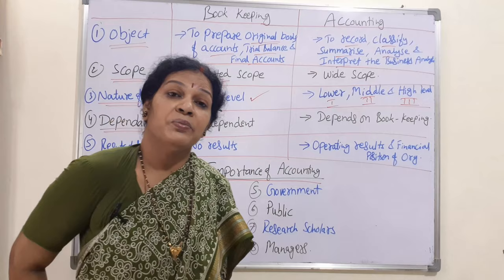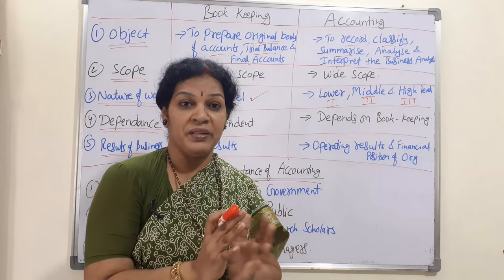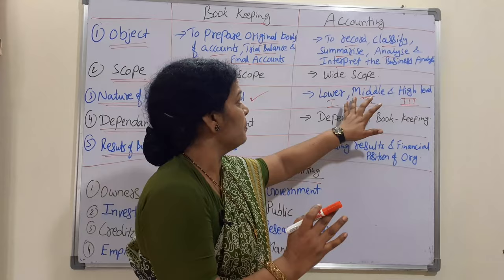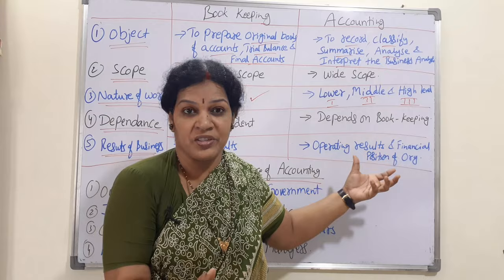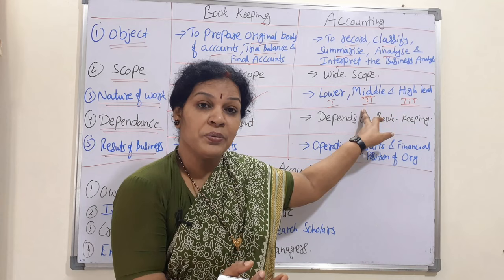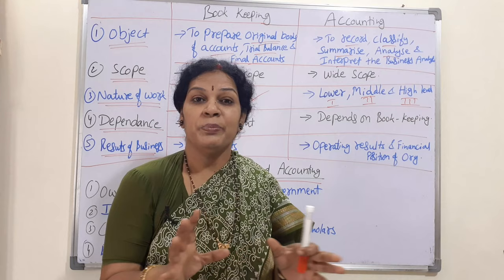Lower-level accountants prepare the basics of accounting — recording and classifying. Middle-level people analyze the data, prepare and give reports. Then high-level accountants take the reports from the second level and present the data to the management — interpreting data and giving advice in a lucid form. So three levels are found in accounting.